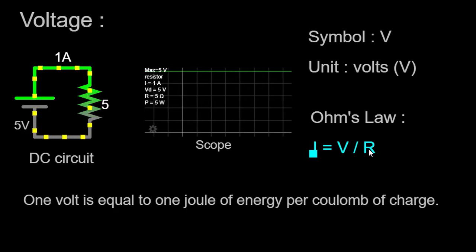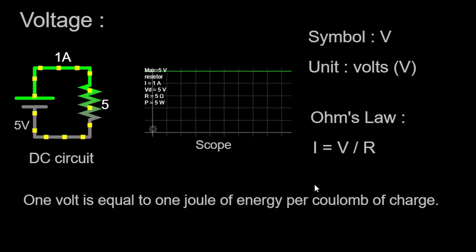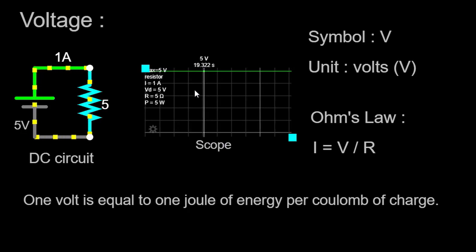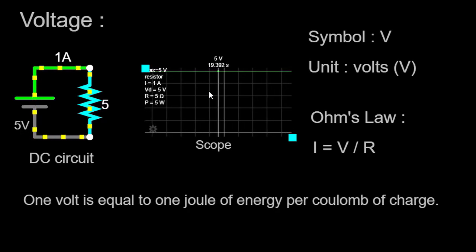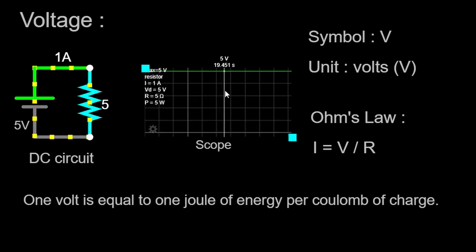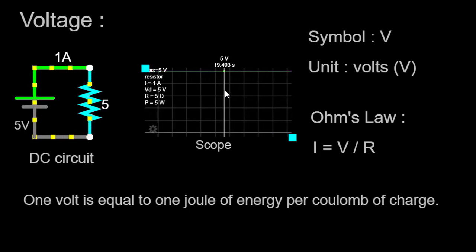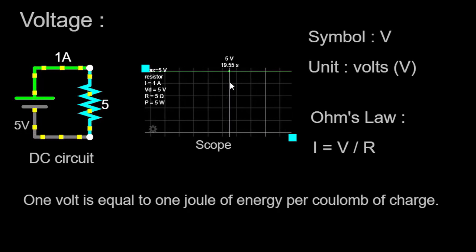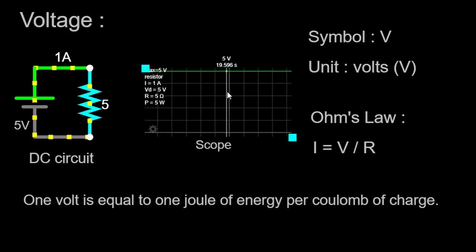In our setup, the 5-ohm resistor restricts the flow of current, creating a predictable relationship between voltage and current. Let's observe the voltage across the resistor using the scope. The scope allows us to visualize the voltage waveform and provides valuable information about its magnitude, frequency, and any fluctuations that may occur over time. As we connect the scope to the circuit, we can see that when the 5-volt voltage source is applied, the voltage across the resistor will also be 5 volts, since in a simple series circuit the sum of the voltage drops must equal the total voltage provided by the source.